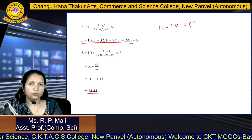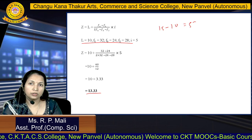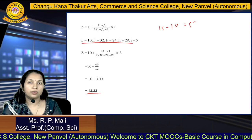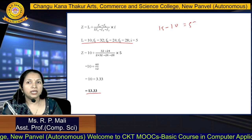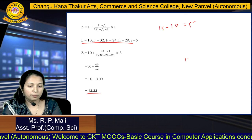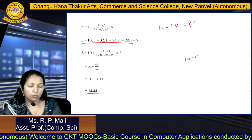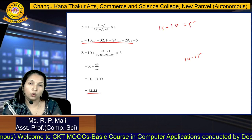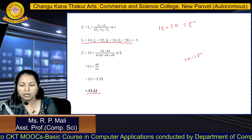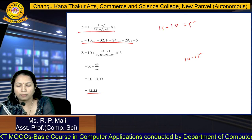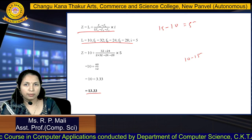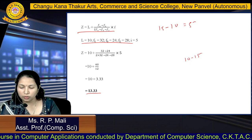For a continuous series, what we did: first, we found the grouping table; after the grouping table, we found the analysis table. In the analysis table, we got one class where your mode will lie. After that, we apply the formula, put all values into the formula, and you get your mode value. Thank you.